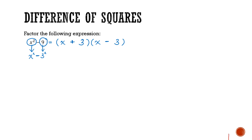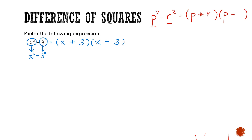To summarize the approach for the difference of squares: if you have the expression in the form p squared minus r squared, it can be factored into two terms — one with addition and one with subtraction. The first term in each bracket is the square root of p squared, which is p, and the second term is the square root of r squared, which is r. That's the general form for factorizing a difference of squares.